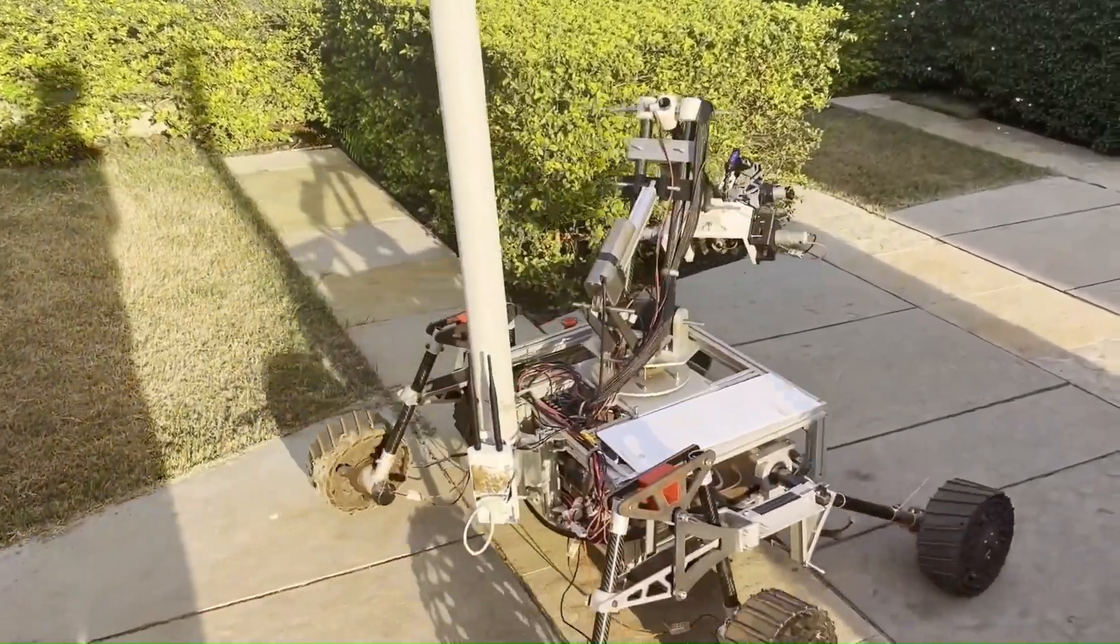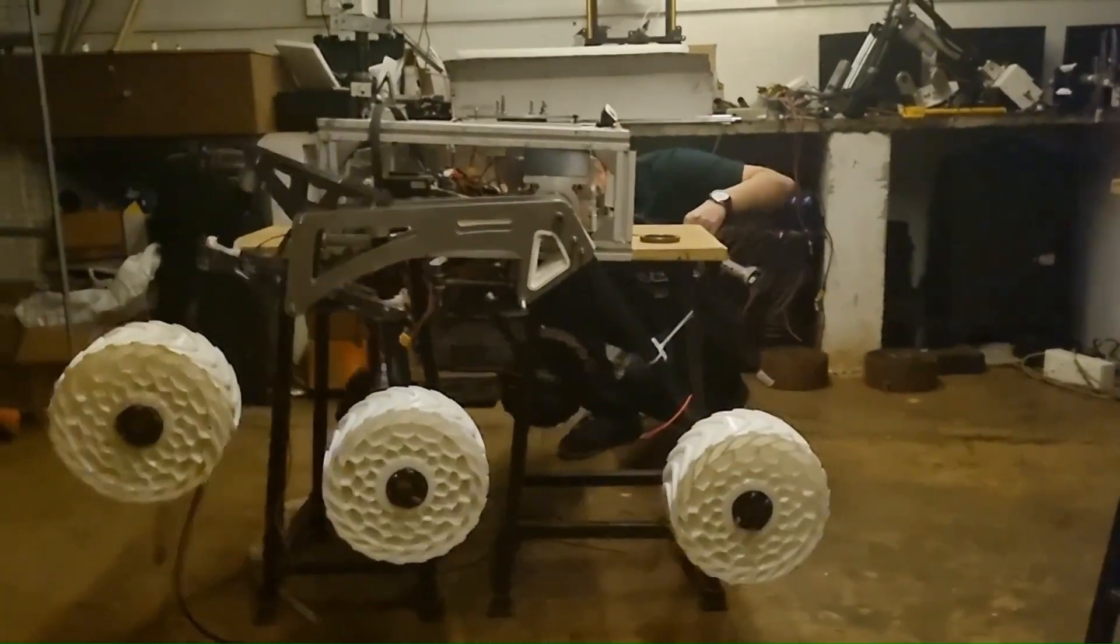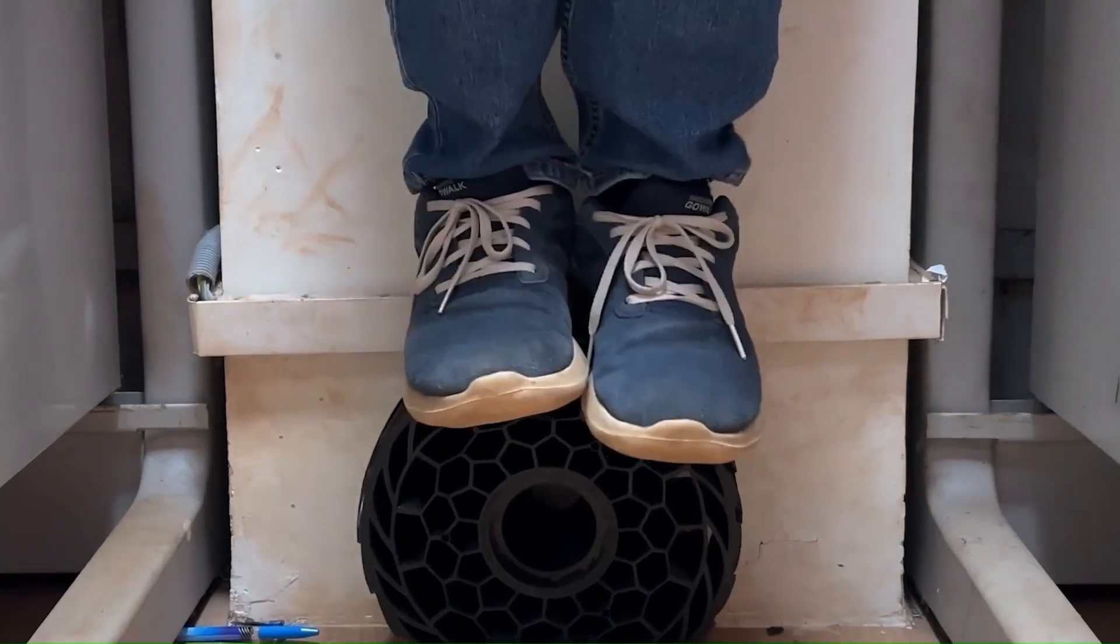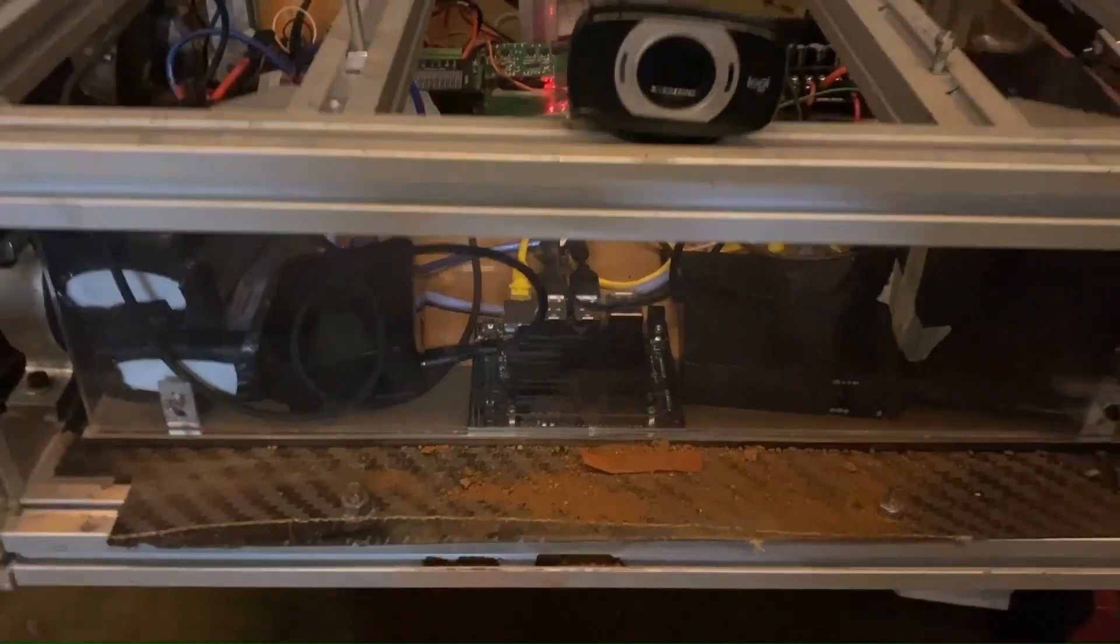We have revamped the suspension making it lighter yet stronger and introduced a new wheel design for better grip. Our core rover has a removable electronics box and a foldable antenna.